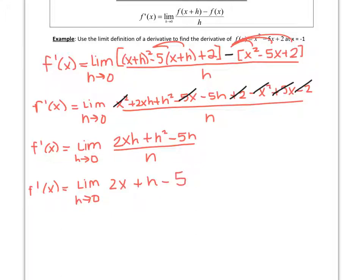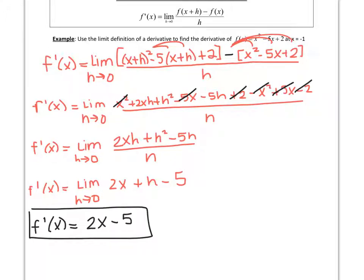Now, since it's simplified, we can take our limit, which means substituting h equals 0 everywhere we see an h. So my derivative equation is 2x minus 5. This is my derivative equation.